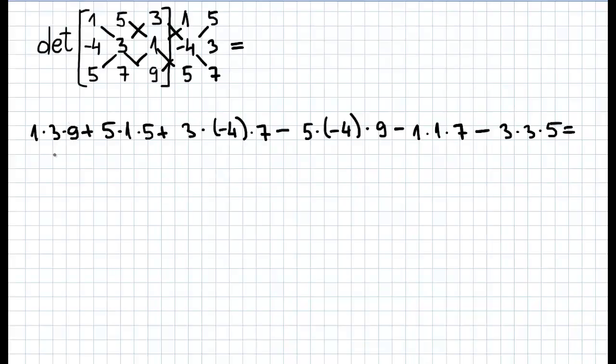Now this equals 27 plus 25 minus 84 plus 180 minus 7 minus 45, which equals 96.